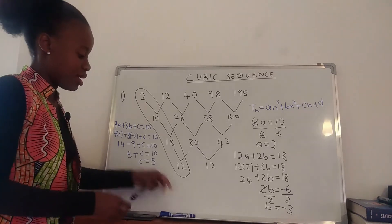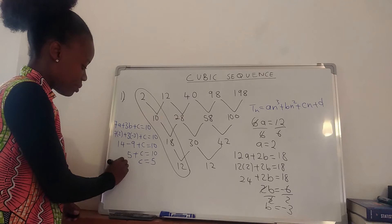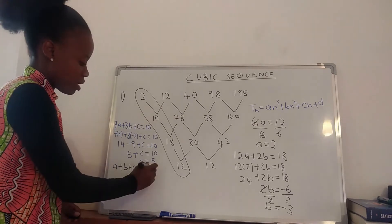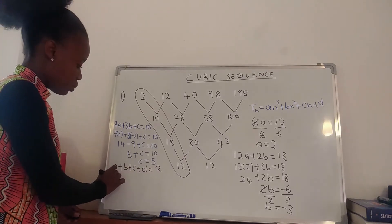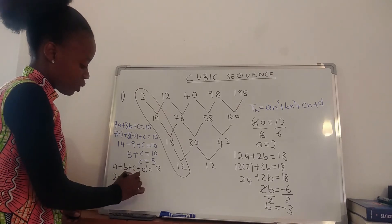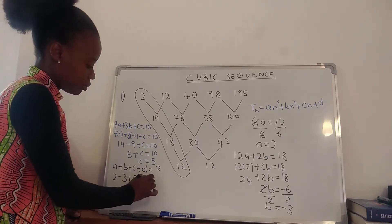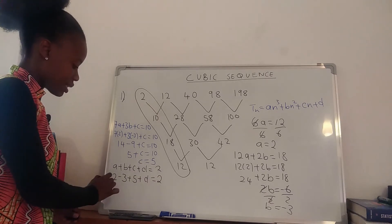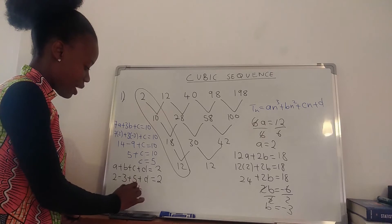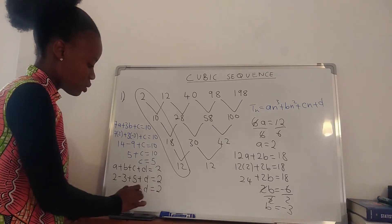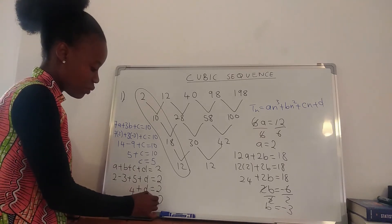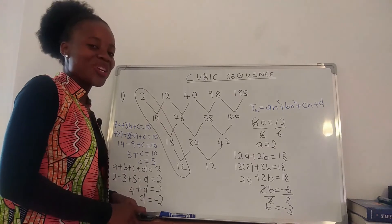To find d, we say a + b + c + d equals the first term, which is 2. Substituting a = 2, b = −3, c = 5: collecting like terms gives 4 + d = 2, so d = −2.